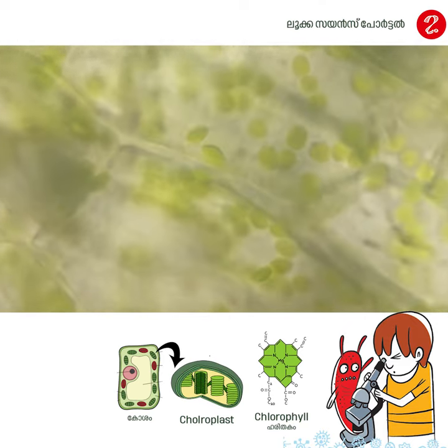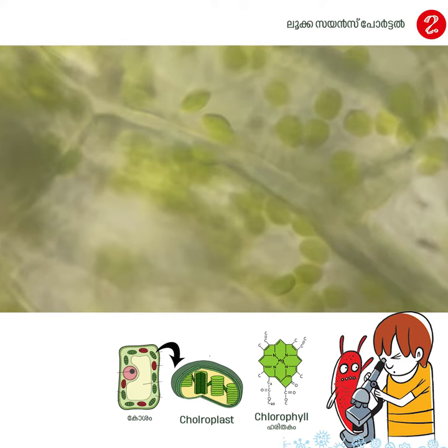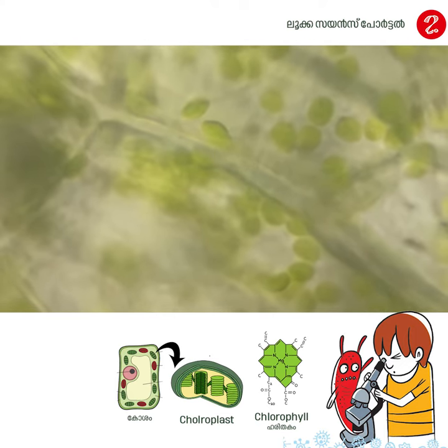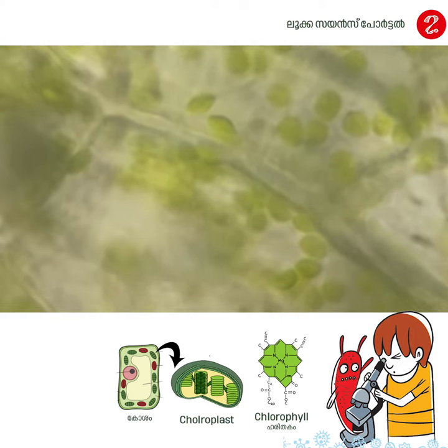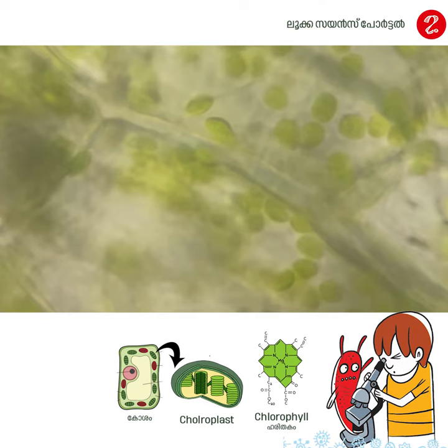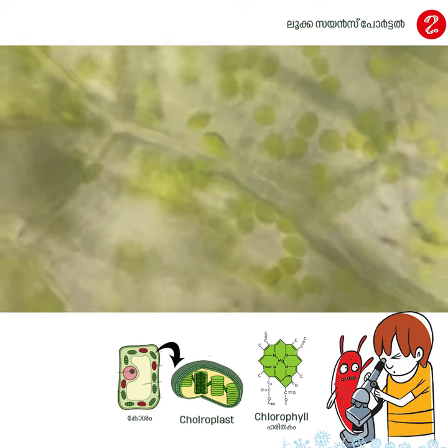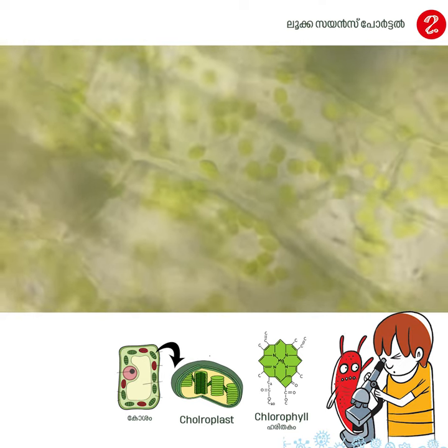Chloroplast is visible near the cell wall. This is cytoplasmic streaming. This is visible in the light. This is cytoplasmic streaming.